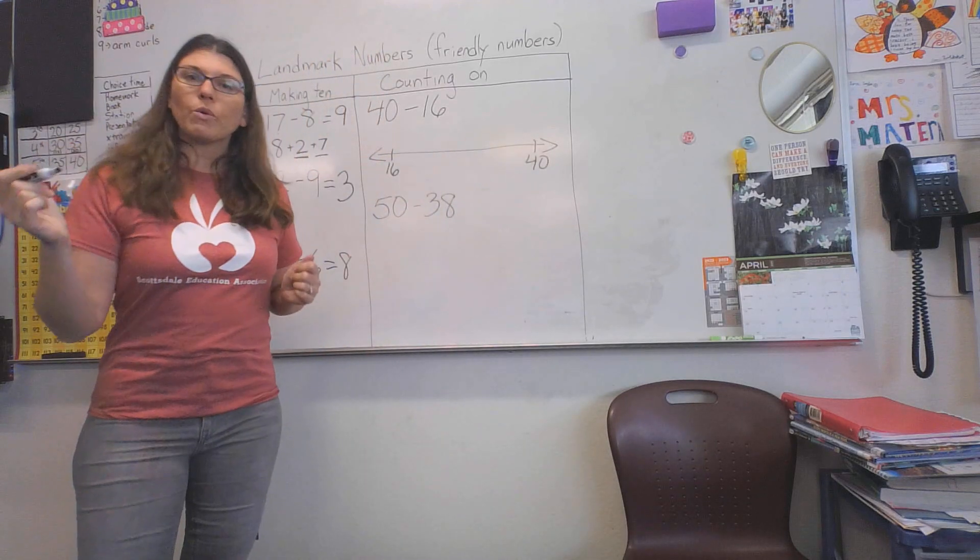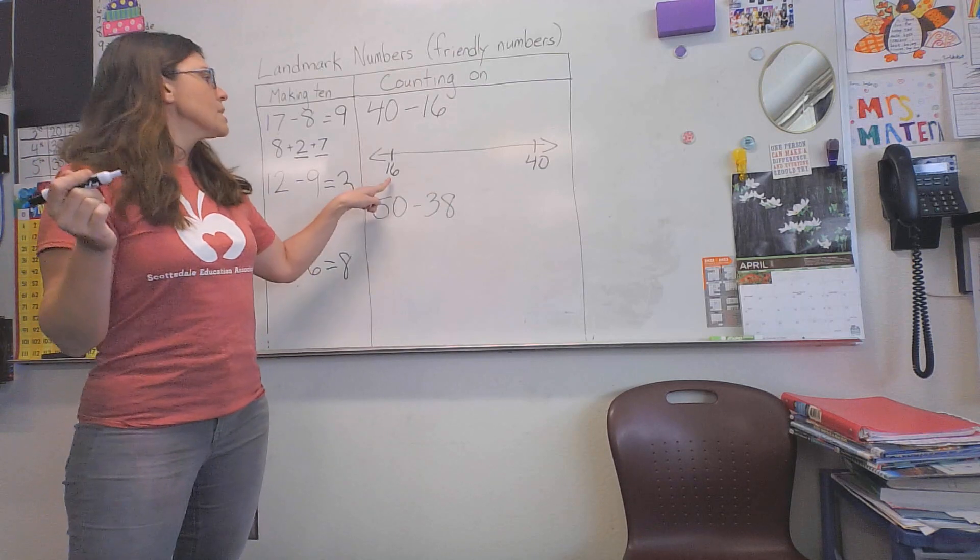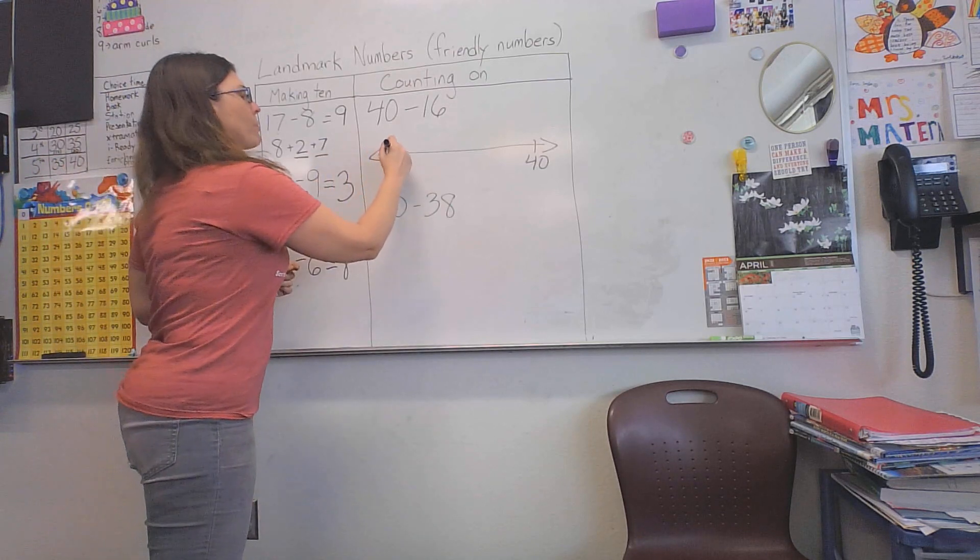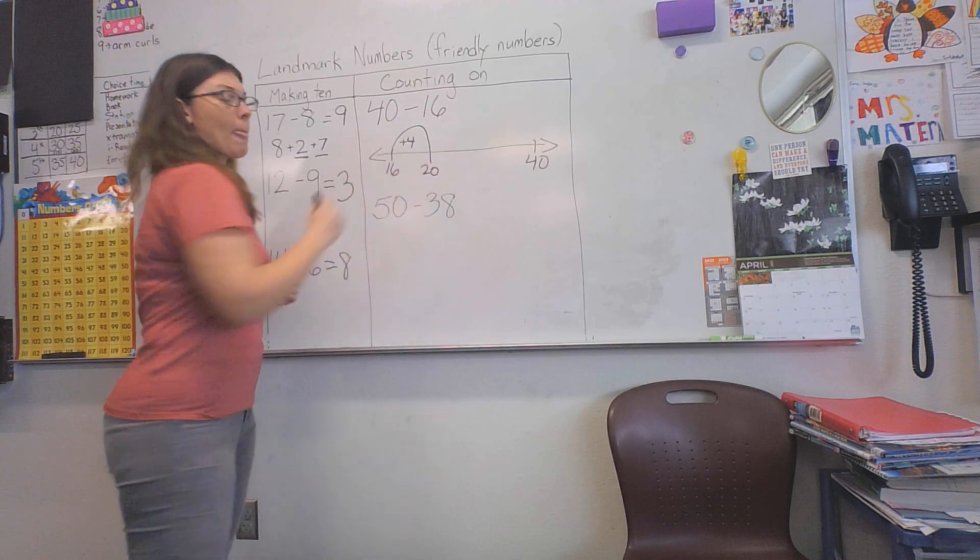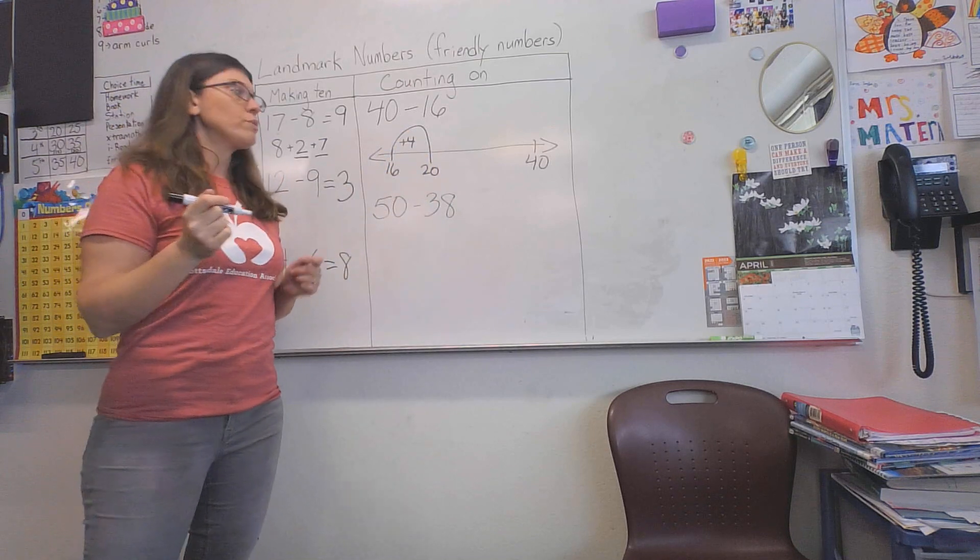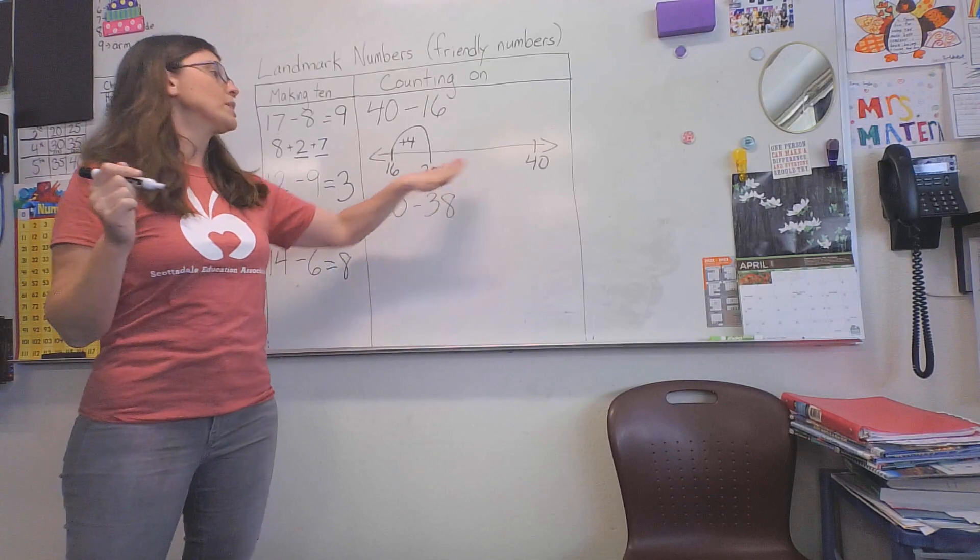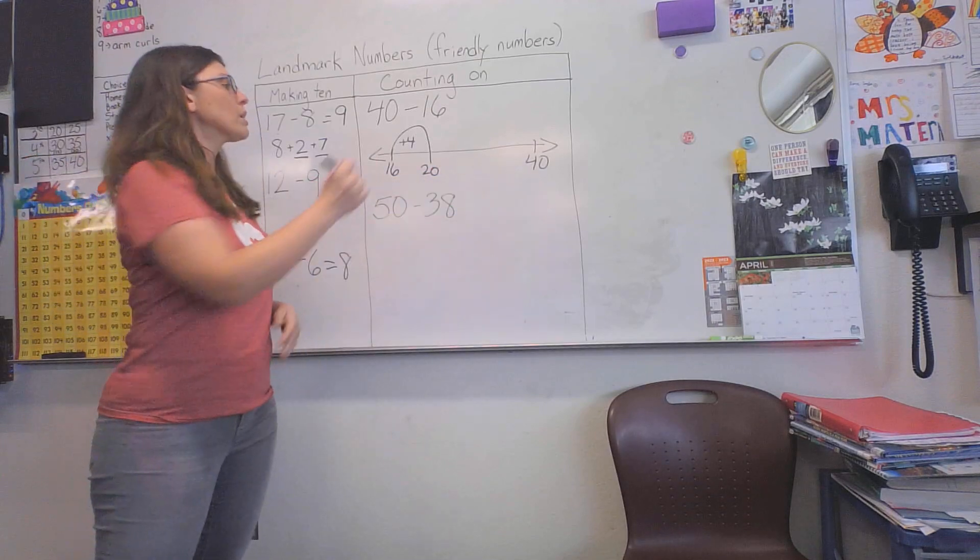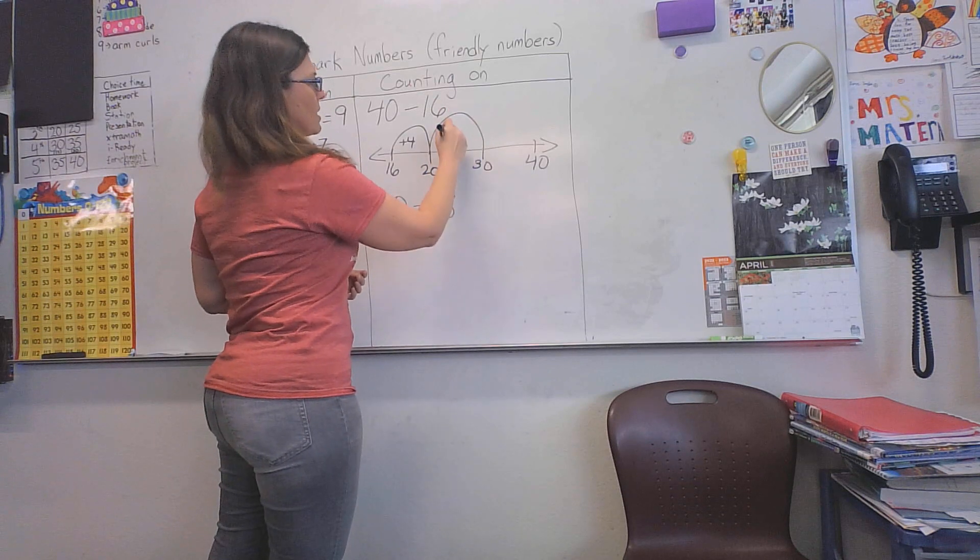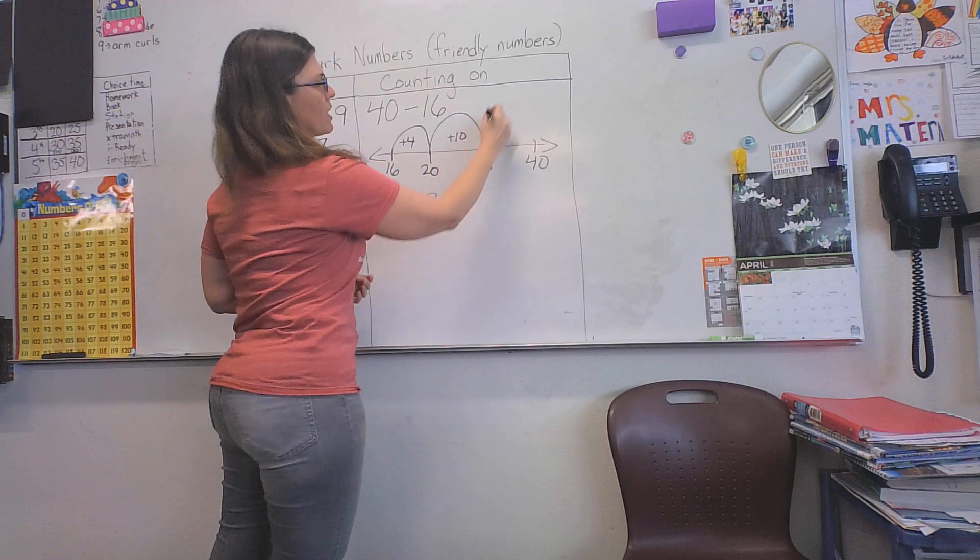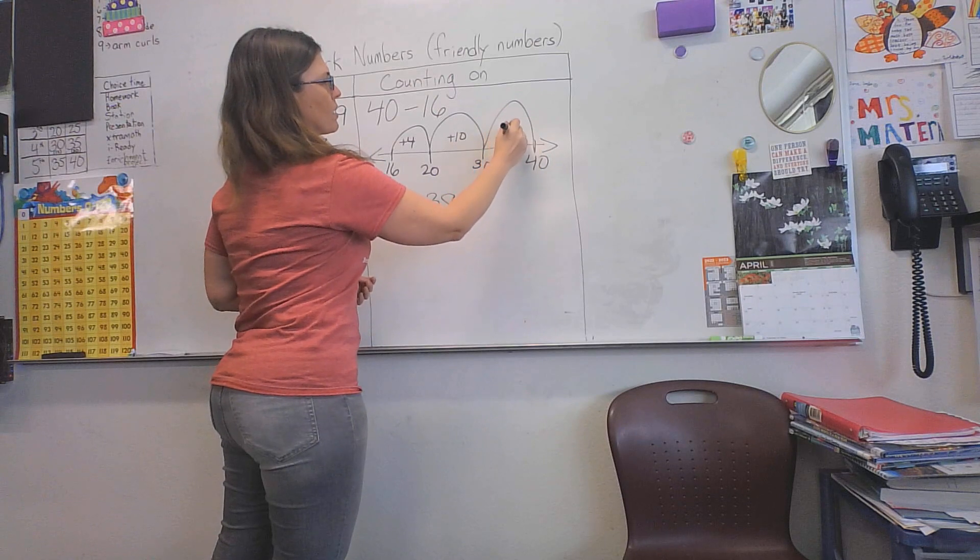We're going to look for landmark numbers. 16 needs 4 more to get to 20, and then students might know that 20 to 40 is just 20 more, or they might count by 10s: 20 to 30 is 10, and 30 to 40 is another 10.